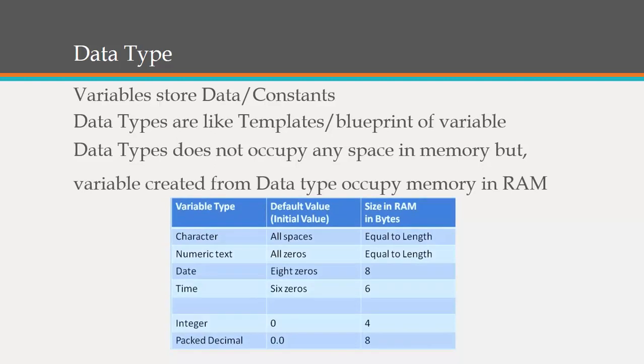These are all the different types of variables we can create with the help of data types. The number of data types available for a programming language equals the number of variable types we could create. In ABAP there are six types of data types: character, numeric, text, date, time, integer, and packed decimal. Using one data type we can create any number of variables. Data types do not occupy space in memory, but variables from data types occupy memory in RAM — this is one of the most important concepts which students usually get wrong.